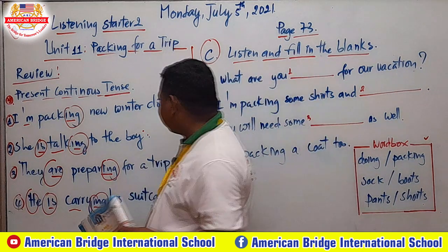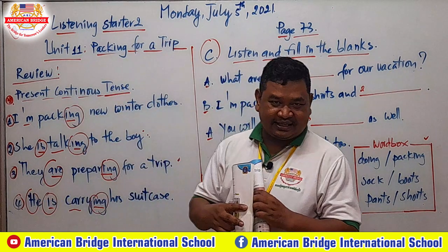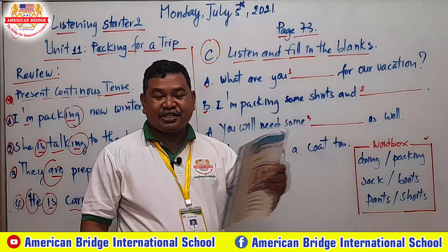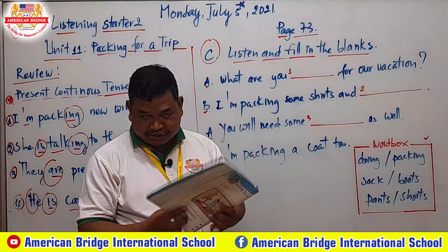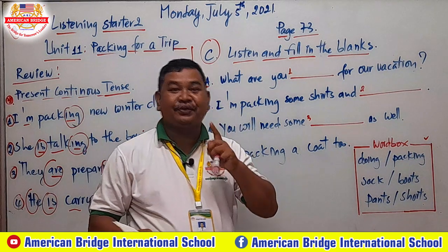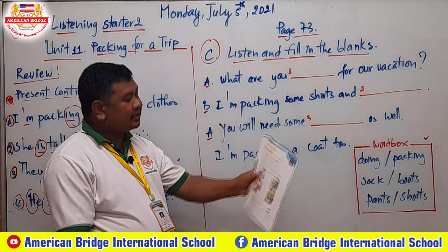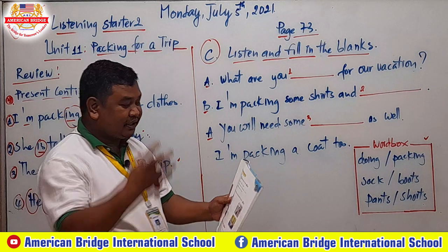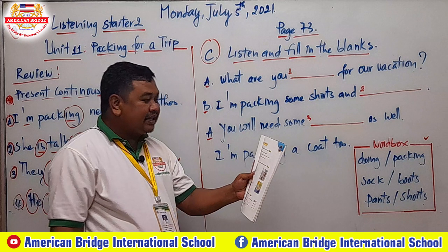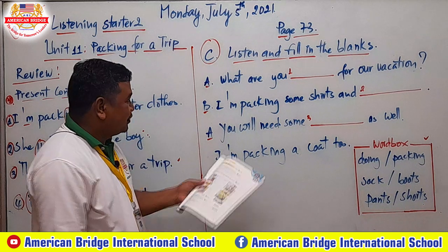Thank you for the review on present continuous tense. Now please open your book to page 73. We need to finish it today, and for Tuesday you will move to page 74. On this page you have three parts: part A — listen and circle the word you hear; part B — listen and write a letter that matches the picture. Both A and B are already finished.